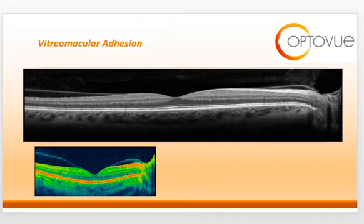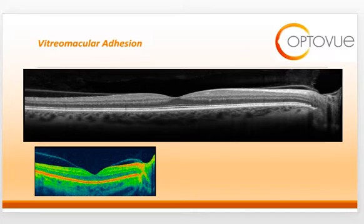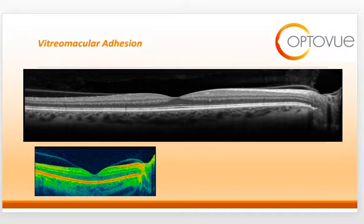The processes of vitreous liquefaction and vitreous contraction together lead to a posterior vitreous detachment, which really can take years to occur. There are several stages in the evolution of a PVD. The next couple of slides show what these stages should look like in normal individuals without any pathologic entities. The first stage is what we call a perifoveal vitreomacular adhesion.